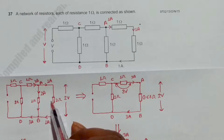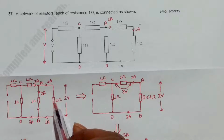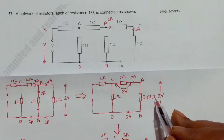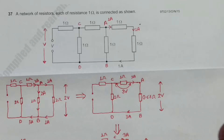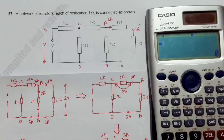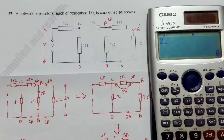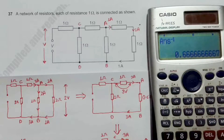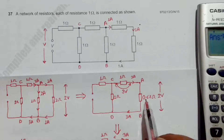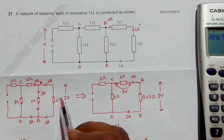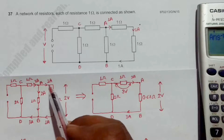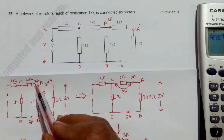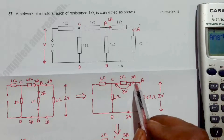These two resistors are in parallel, so they form a combined resistance of 0.67 ohm — the parallel combination of 1 and 2 ohm. You can verify on a calculator: 1/2 + 1/1, then take the reciprocal, which gives 0.6667 ohm. Since 1 ampere and 2 ampere meet, the total current through this combination is 3 ampere.